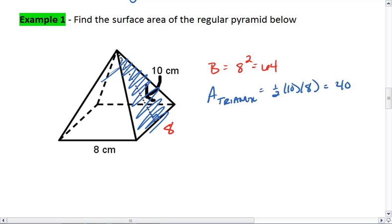And so then all the blue area, the lateral faces, so my area of my lateral faces is 4 times 40, which is 160.